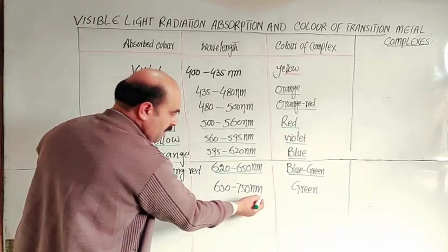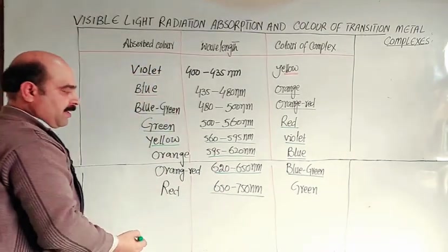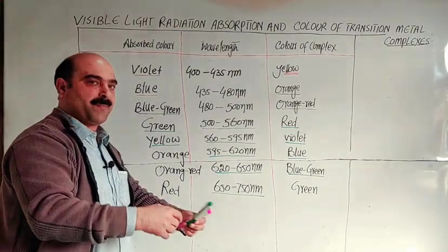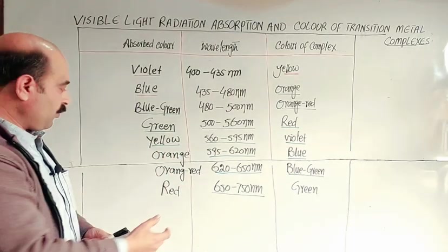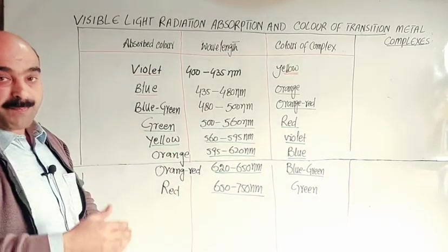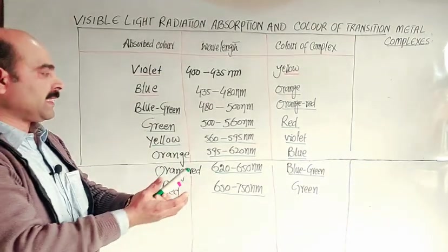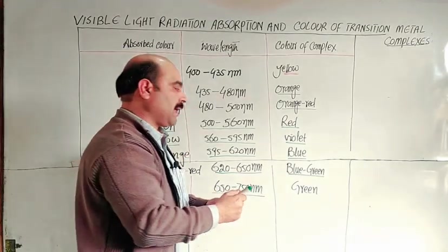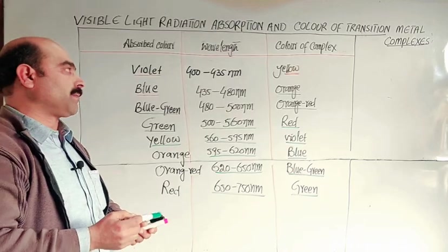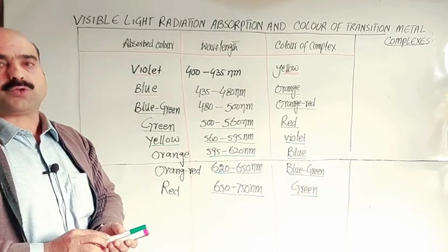If a coordination compound absorbs radiation from the visible range, 650 to 750 nanometer wavelength, this is red color wavelength, meaning red color is absorbed. The remaining six are emitted. Those six together form one dominant color, which is green. The complementary color is green, so the coordination complex color will be green.